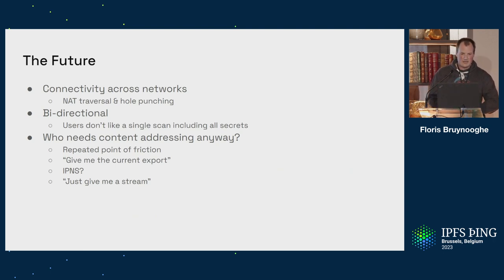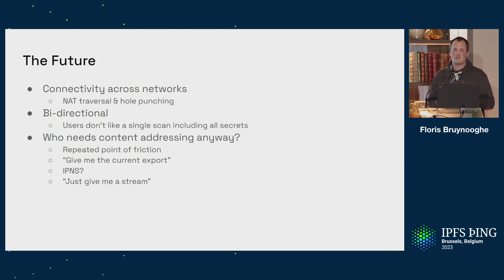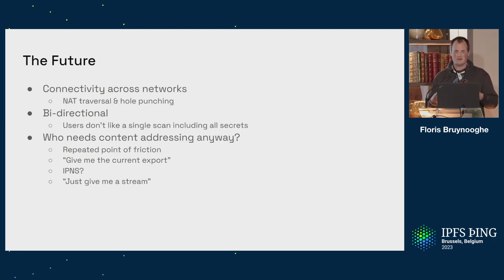Some feedback from the Delta Chat side: obviously, connectivity across networks would be nice — not being limited to local network, and having to stuff all these IP addresses into the QR code is not ideal. That's something we're actively working on. Also, users are surprisingly uncomfortable about a single QR scan giving access to all their data including their private key. Their first reaction is: why can't I scan the other way around? You could add a confirmation code like Bluetooth setup does, but that would also need a modification to the IRO protocol — right now you couldn't implement that.